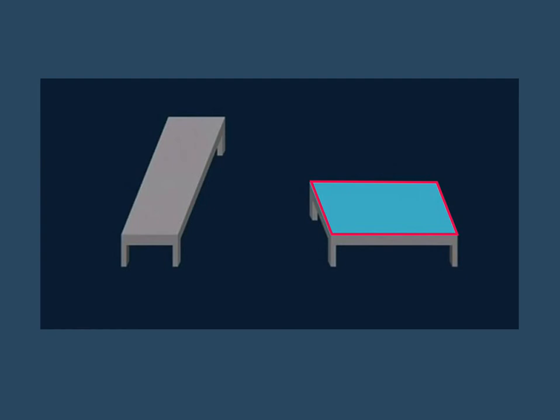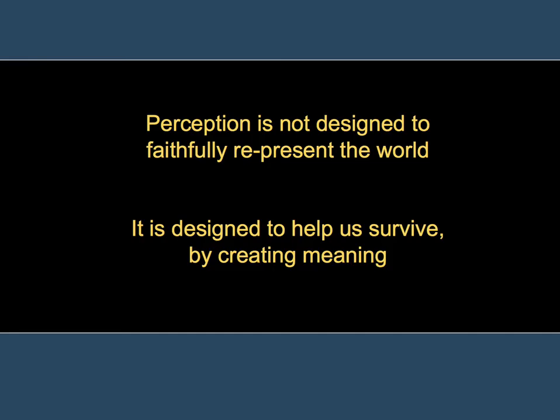What all these things demonstrate is something very interesting about the visual system. The point I want to impress upon you is that our perception is not designed to faithfully represent the world. It's not about being a passive recipient and giving us an accurate image of what the physical world looks like. Instead, it's designed to help us survive — it creates meaning — and that propensity for meaning-making can be played with and manipulated in two-dimensional illusions.